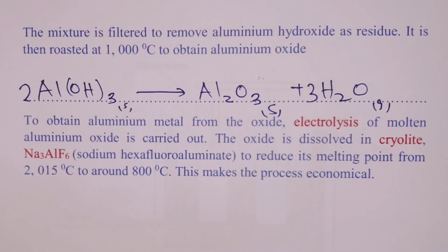Now moving forward, to get aluminum metal from the oxide, we do electrolysis of our molten aluminum oxide. Of course, the oxide is dissolved in cryolite. Cryolite is simply sodium hexafluoroaluminate with the formula Na3AlF6. We do this to reduce the melting point of aluminum oxide from 2,015 degrees Celsius to about 800 degrees Celsius. The reason why we do this is to make the process more economical. The electrolysis is done in what we call Hall's cell.